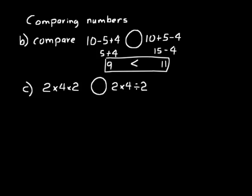Let's try another one. This one has multiplication and division in the operations. Compare the left operation with the right operation. So first let's simplify. We can just do these in our head. 2 times 4 is 8, times 2 is 16. And then on the right we have 2 times 4 is 8, divided by 2 is 4. So this time the left side is greater than the right side, so we say 16 is greater than 4.